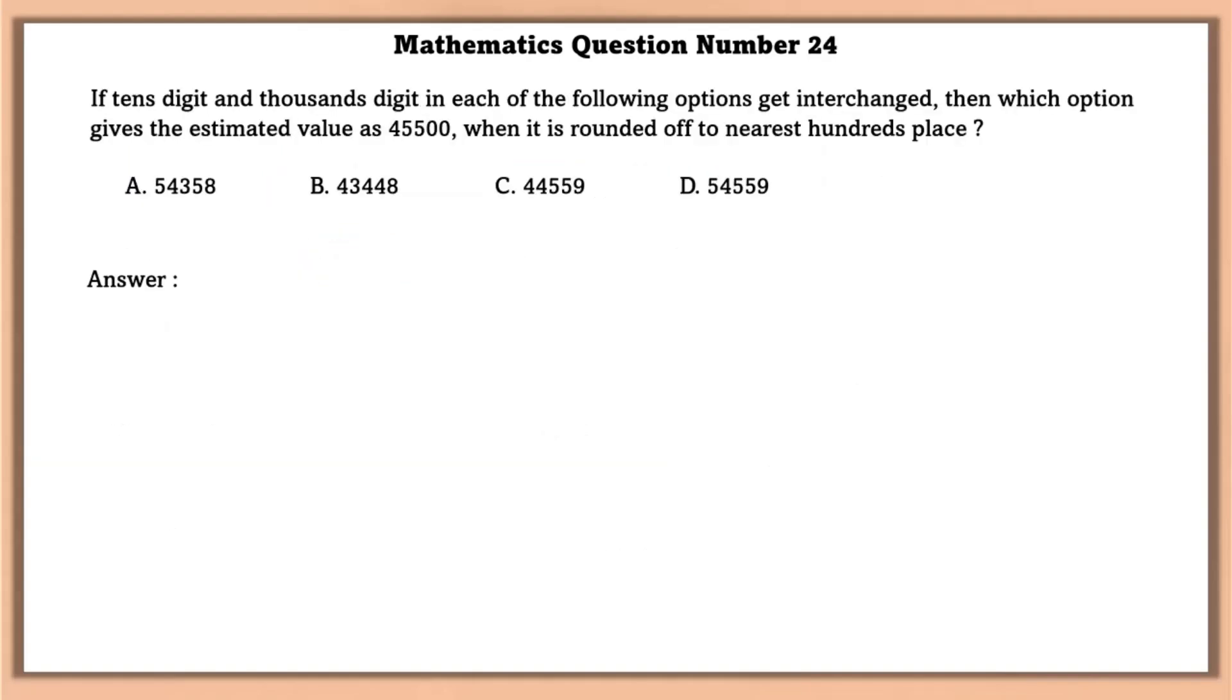Mathematics question number 24. If 10th digit and 1000th digit in each of the following options get interchanged, then which option gives the estimate value of 45,500 when it is rounded off to the nearest 100th place? In option A and option B starts with 54,000. But in the actual answer, we need 45,000. So we can leave these two options.